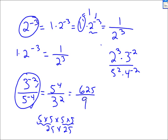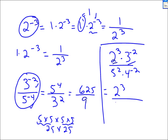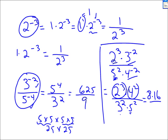If you have this, go factor by factor. 2 to the 3 stays where it is. 3 to the negative 2 has a negative exponent — it crosses the division line; it was on top, it's now on the bottom. The 5 squared stays where it is, in the denominator — it stays in the denominator. And the 4 to the negative 2 has a negative exponent; I move it to the top. If you want to evaluate: 2 cubed is 8, 4 squared is 16, 3 squared is 9, 5 squared is 25. 8 times 16 is 128, and 9 times 25 is 225. And there is the answer.